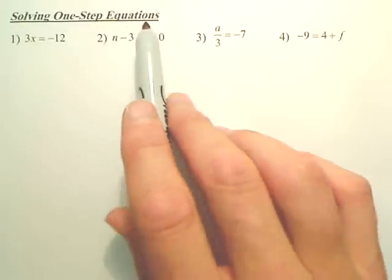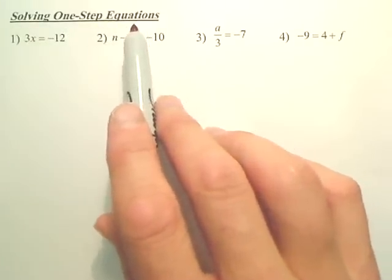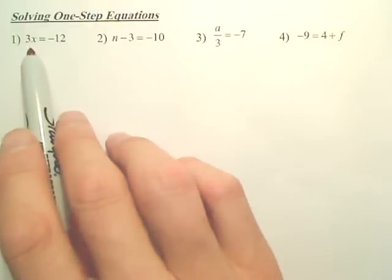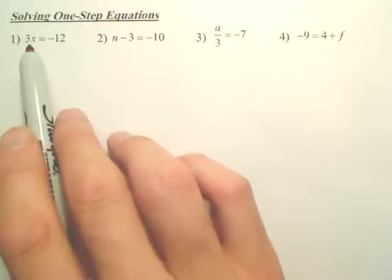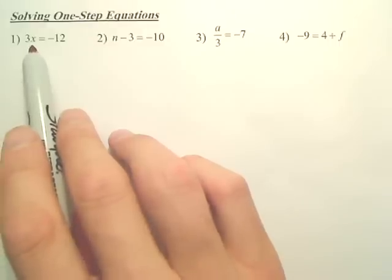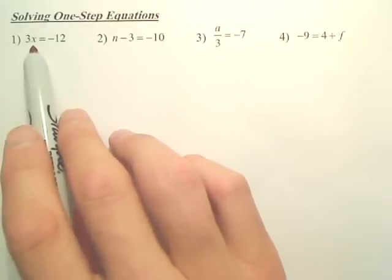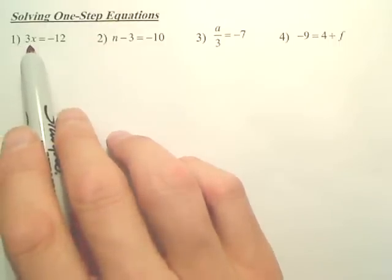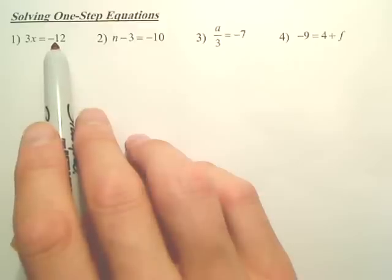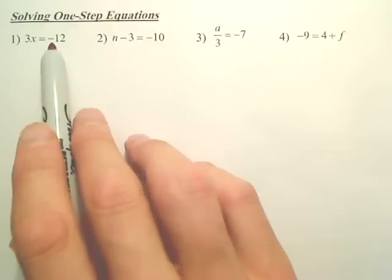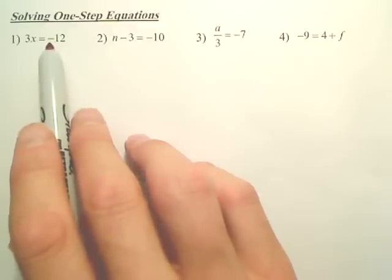When we try to solve one-step equations, basically we're trying to find out what number, when we plug in for x, will give me a true statement. Now some of you can look at this and just realize 3 times what gives me negative 12. A lot of you can look at that and know it's 4. That is good. For one-step equations, most of you can look and tell.